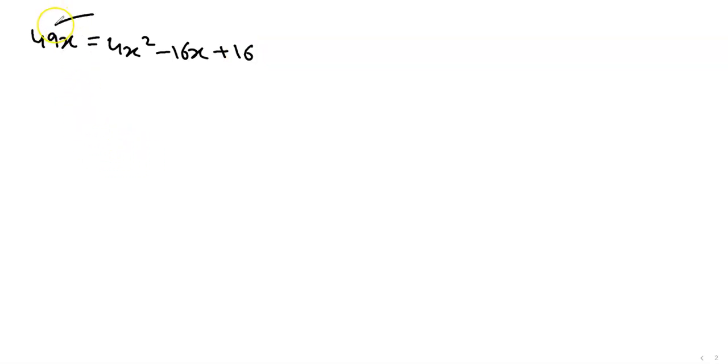Correct. Ab ye x ke saath hum yahan pe shift karenge. To plus forty nine yahan ayega, to minus ho jayega. To equation ban jayegi: four x square minus sixteen x minus forty nine x plus sixteen equal to zero. Ab four x square, ye minus sixteen aur minus forty nine, minus minus plus, to forty nine aur sixteen plus karenge. To humare paas bacheyega: minus sixty five x plus sixteen equal to zero.